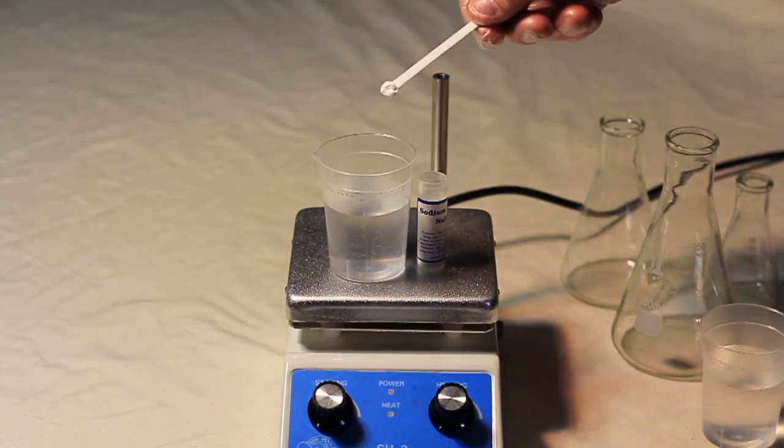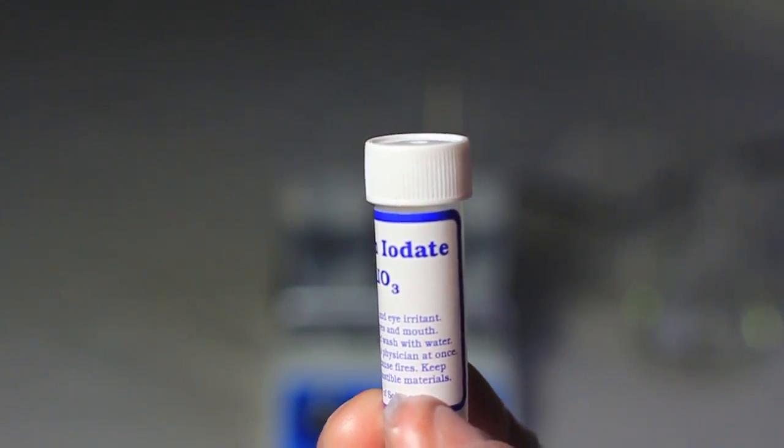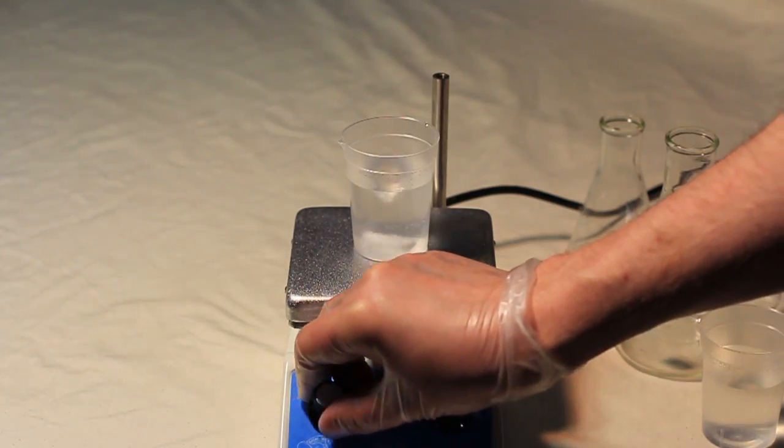To create this jaw-dropping effect, I'll first add a small amount of sodium iodate into a small beaker of water. Mix it up just a bit and place it to the side.